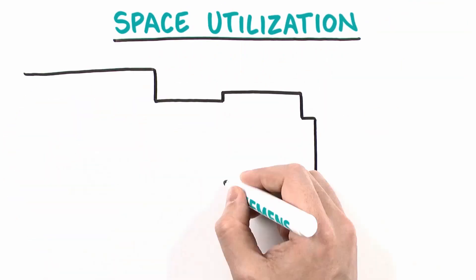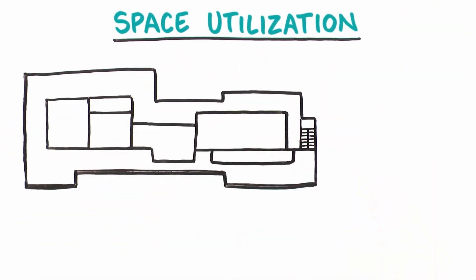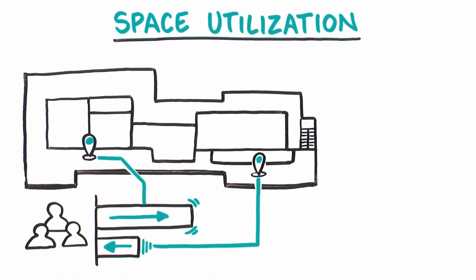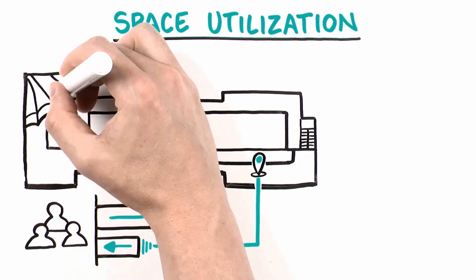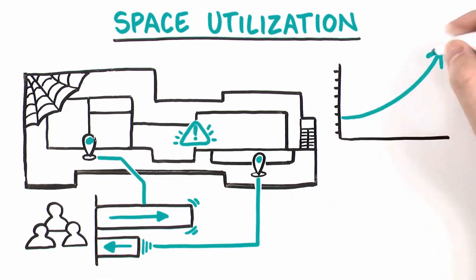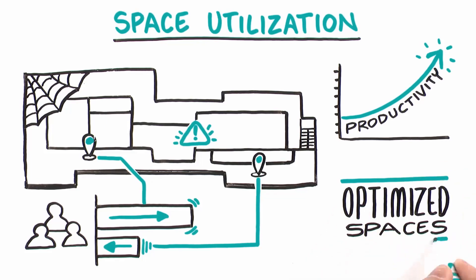Space utilization applications leverage an IoT network to optimize the building footprint through visual analysis of motion and movement in the building. Analyzing utilization rates, owners can implement space design changes or right-size conference rooms and open spaces, increasing productivity and optimizing spaces.